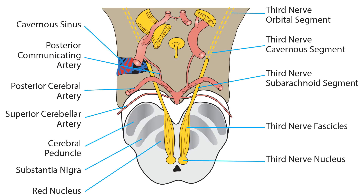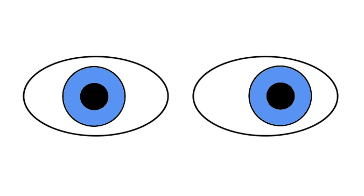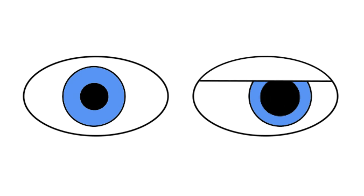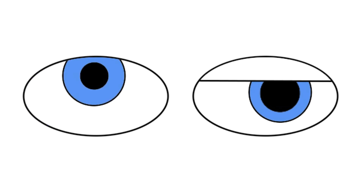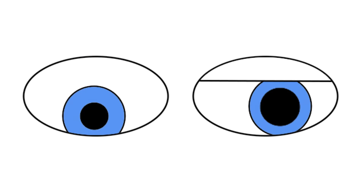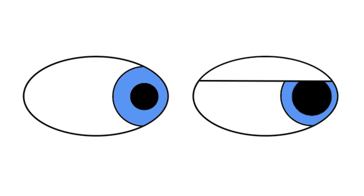Damage to the third cranial nerve can occur anywhere along this pathway. It causes exotropia, ptosis, a dilated pupil, and impairments of adduction, superduction, and infraduction. Abduction will be intact. Here is what it looks like in a patient whose pupil happens to be spared.